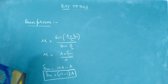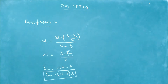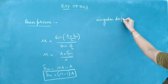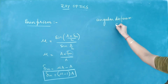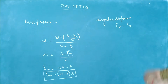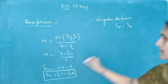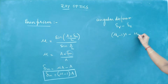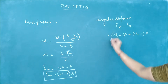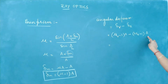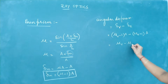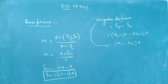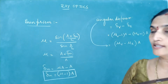Using this relation, the angular dispersion for thin prisms becomes delta V minus delta R, which we can write as (mu_V minus 1)·A minus (mu_R minus 1)·A. This simplifies to (mu_V minus mu_R)·A. So angular dispersion for thin prisms equals (mu_V minus mu_R) multiplied by A. This relation is only applicable for thin prisms.